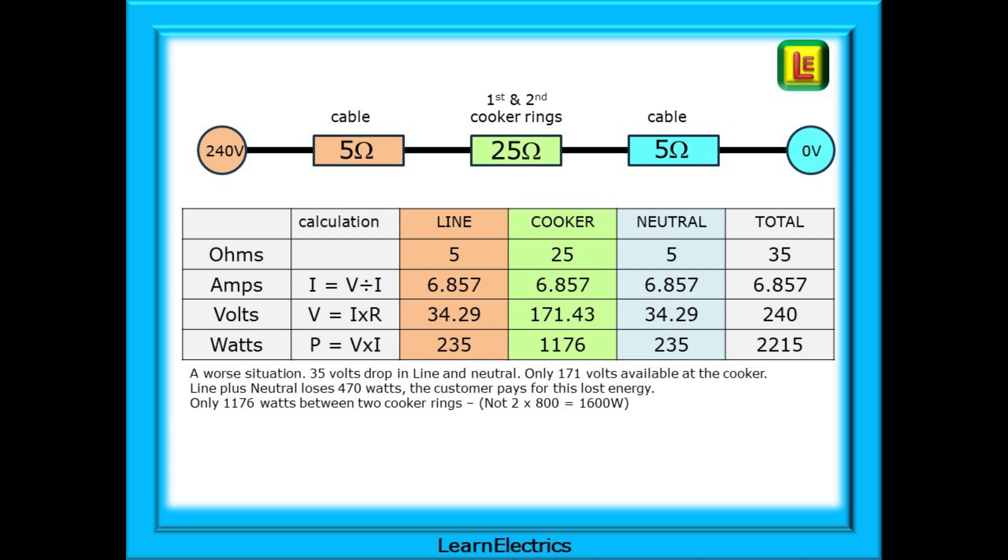The table shows that we have a much worse situation. There is a 35 volt drop in the line and neutral conductors, and only 171 volts is available at the cooker. Line plus neutral loses 470 watts of power, and the customer is paying for this lost energy. Only 1176 watts of power is produced between the two cooker rings. This is not the 2 times 800 watts or 1600 watts that you might expect from the previous example, as each ring is producing less than 600 watts of usable power.